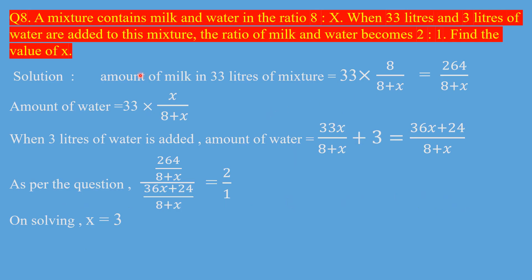First, find the amount of milk in 33 liters of this mixture. The ratio is 8 to x, so the amount of milk will be 33 multiplied by 8 upon the sum of ratios, which is 33 times 8 upon 8 plus x. When you solve it, you will get 264 upon 8 plus x.